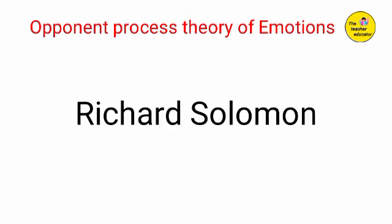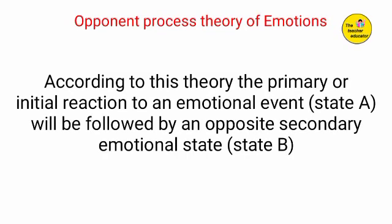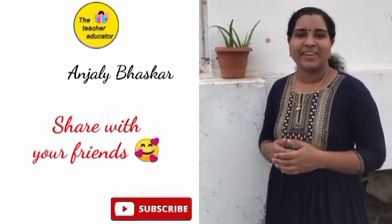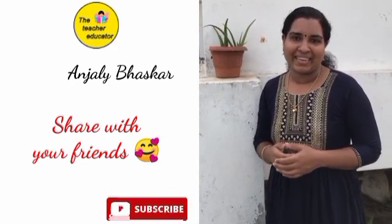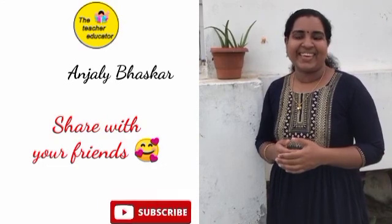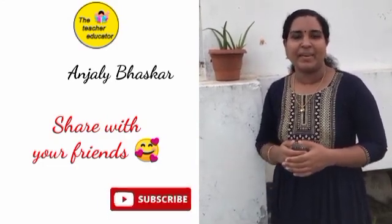This theory was proposed by Richard Solomon — the opponent process theory of emotion. The primary or initial reaction to an emotional event, state A, will be followed by an opposite secondary emotion, state B. The best example is drug addiction: pleasure as state A becomes a painful withdrawal experience as state B. If you found this helpful, please subscribe to the Teacher Educator channel, press the bell icon for notifications, comment on this topic, and share the videos with your friends.